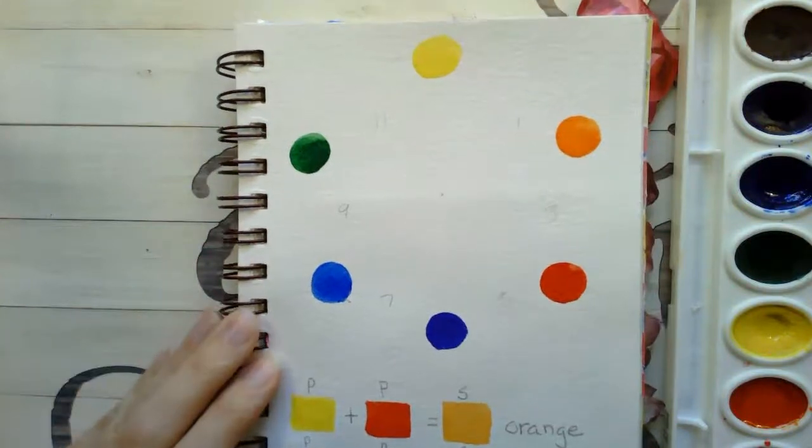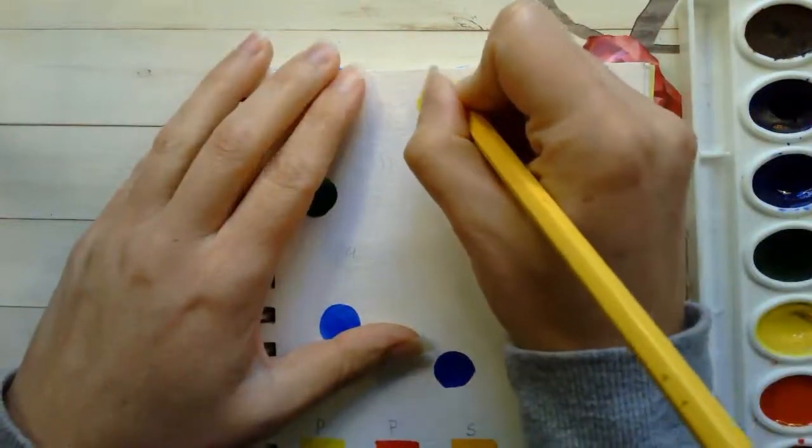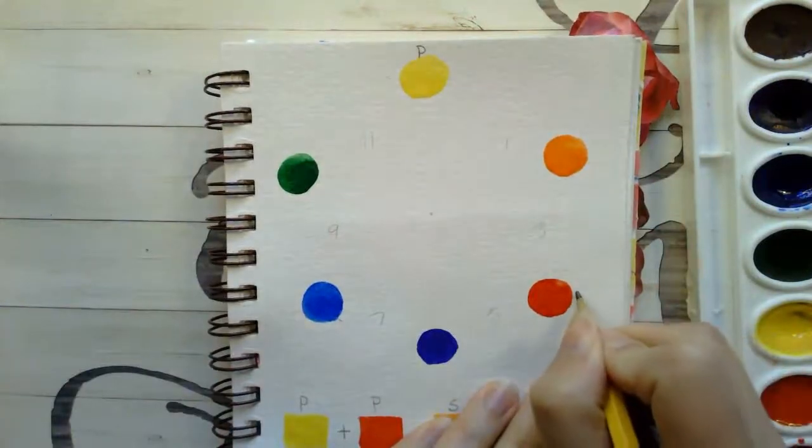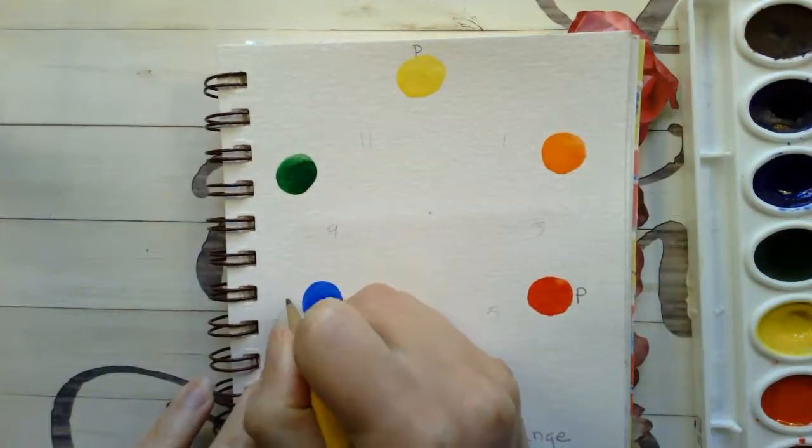Right now, while the page is dry, we're going to go in and label our primary colors with the letter P. So for review, those are yellow, red, and blue.